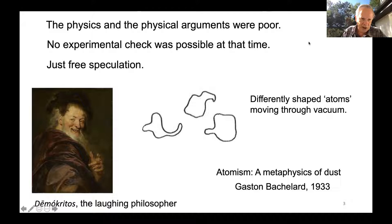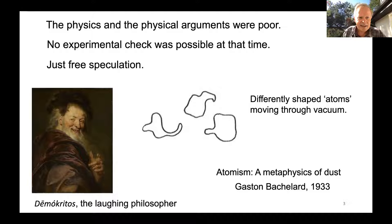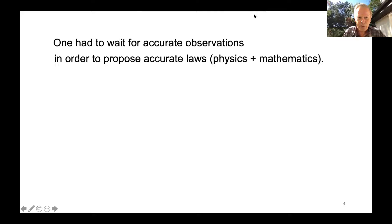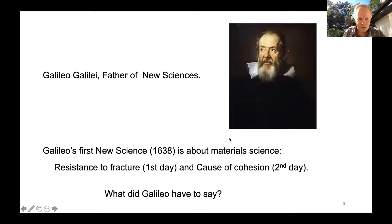It was just free speculation. The kind of atoms for Empedocles were like what you could see in dust — the opinion of Gaston Bachelard, a French epistemologist. Democritus was the laughing philosopher — maybe he was laughing at us. One had to wait for accurate observations in order to propose accurate laws, both from a physical and a mathematical point of view. Galileo Galilei was the father of two new sciences and the father of experimental sciences. His first new science was actually material science — resistance to fracture and causes of cohesion.